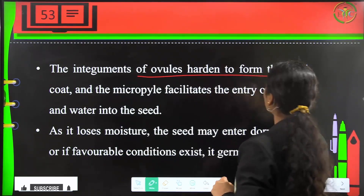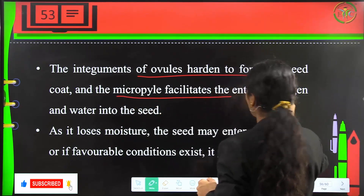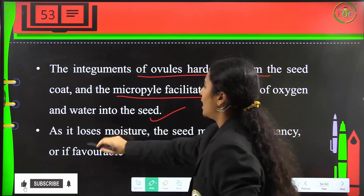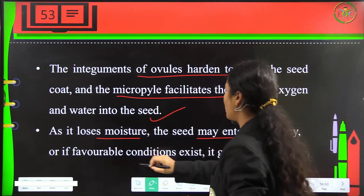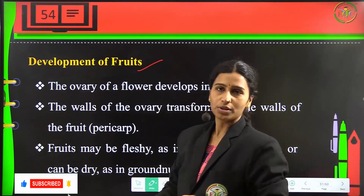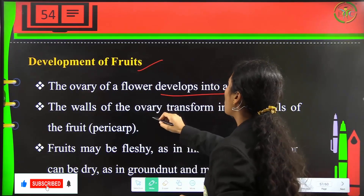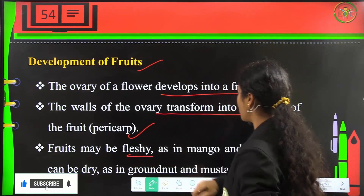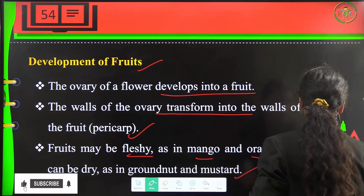Integuments of ovules harden to form the seed coat. The micropyle facilitates the entry of oxygen and water into the seed. As the seed loses moisture, it may enter dormancy, or if favorable conditions exist, it will germinate. The ovary of the flower develops into the fruit, and the walls of the ovary transform into the walls of the fruit called the pericarp. Fruits may be fleshy as in mango and orange, or dry as in groundnut and mustard.